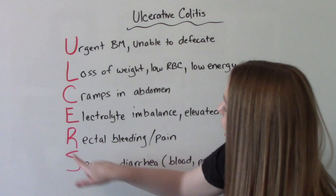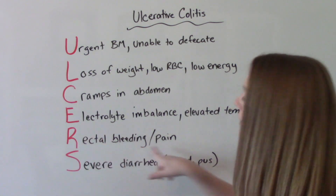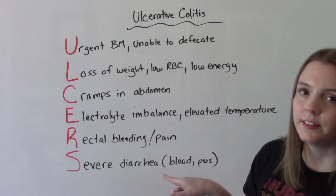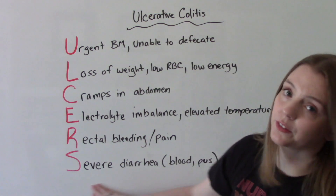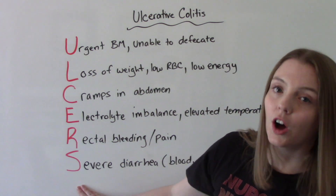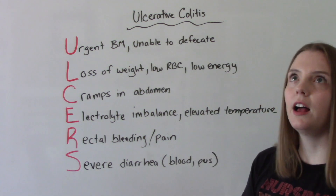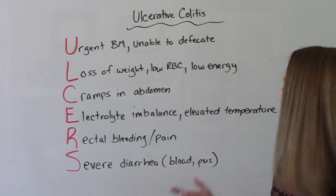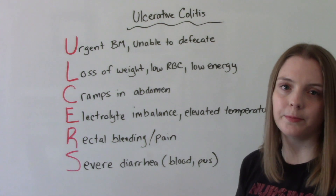R is for rectal bleeding or rectal pain. And S is severe diarrhea — oftentimes there is blood, mucus, or pus in that diarrhea.